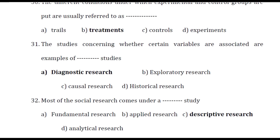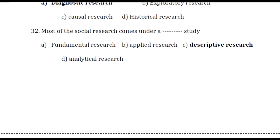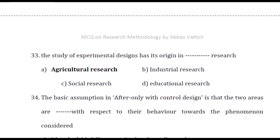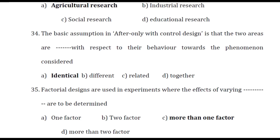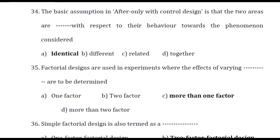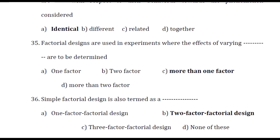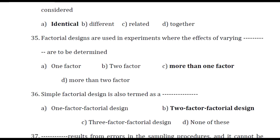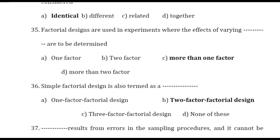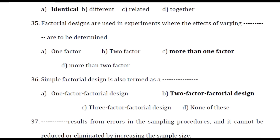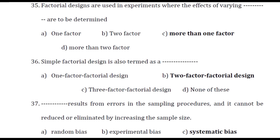Most of the social research comes under descriptive research study. The study of experimental designs has its origin in agricultural research. The basic assumption in the after-only with control design is that the two areas are identical with respect to their behavior towards a phenomenon considered. Simple factorial design is also termed as two-factor factorial design.